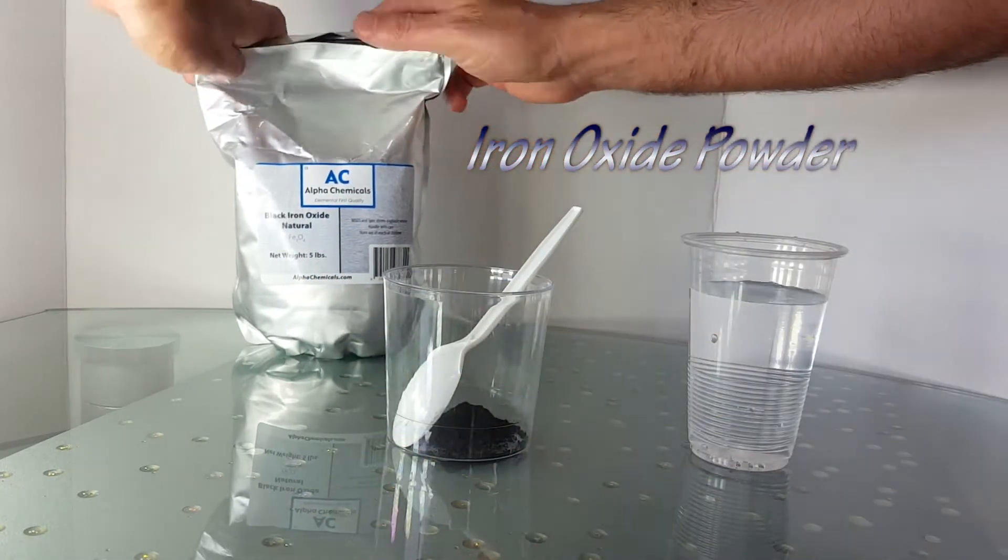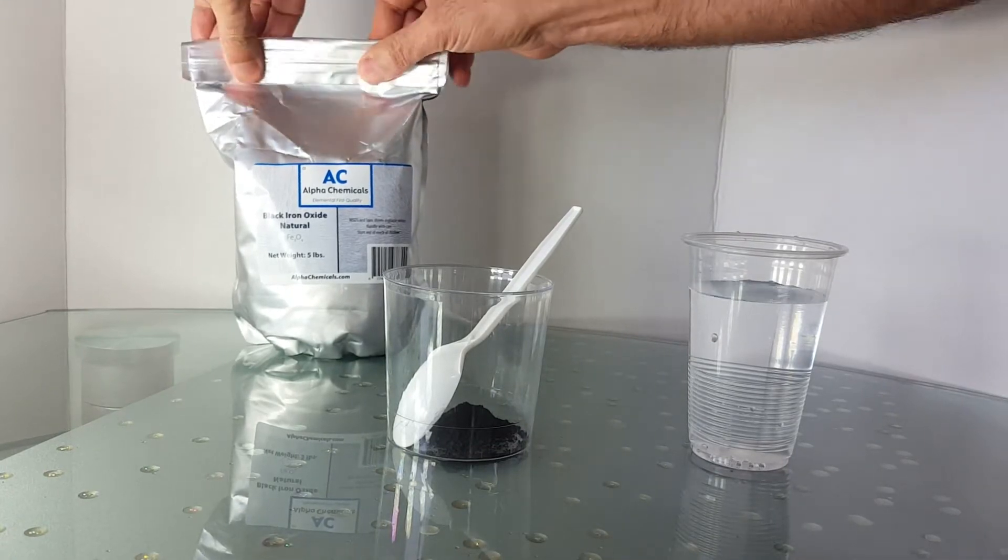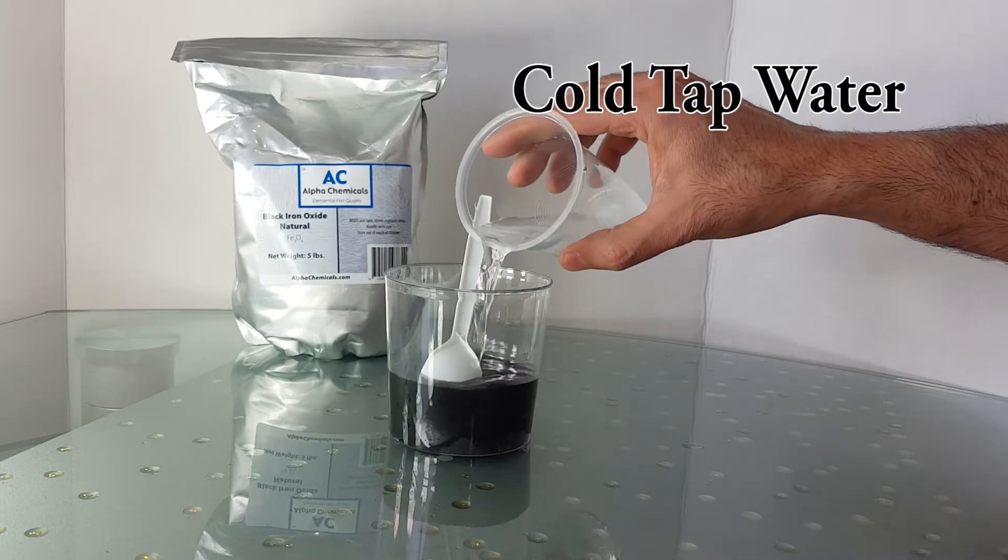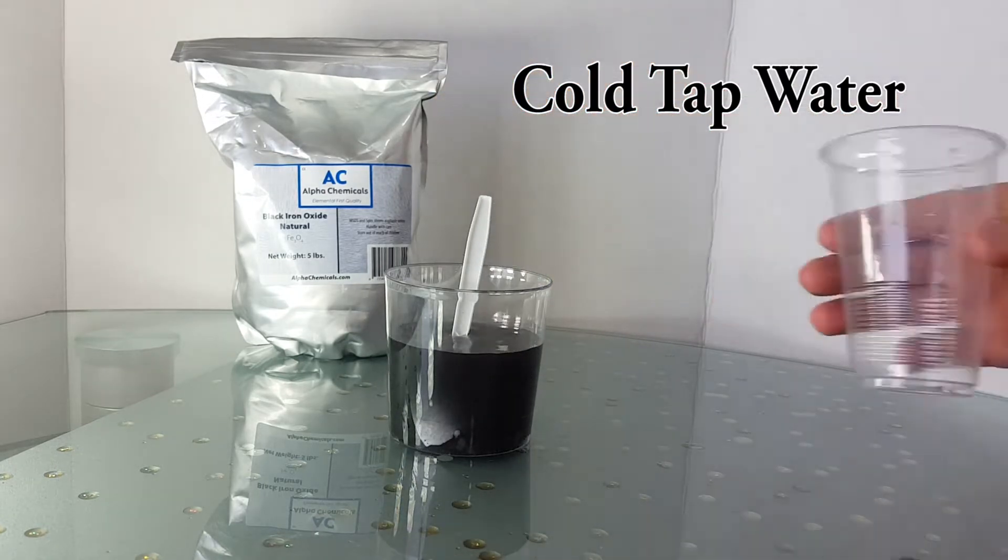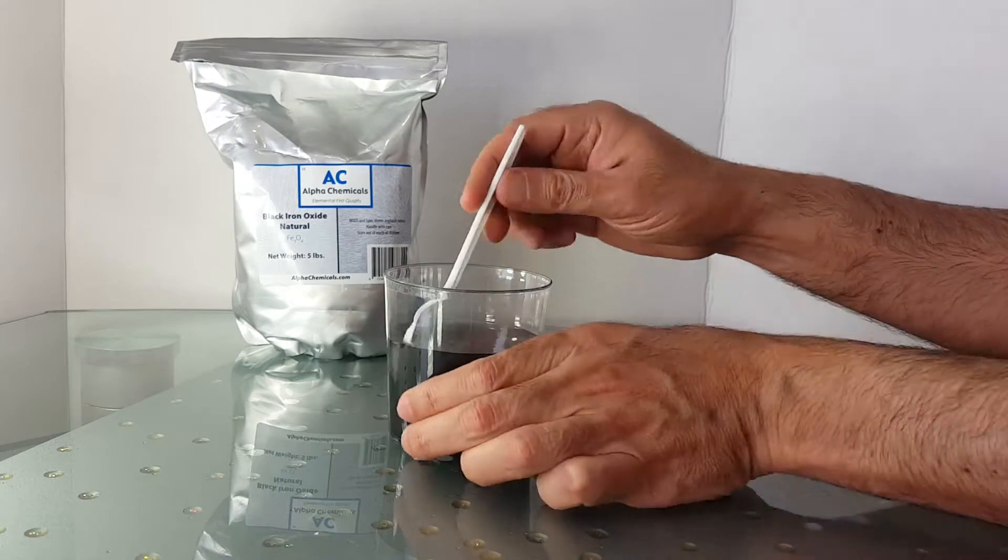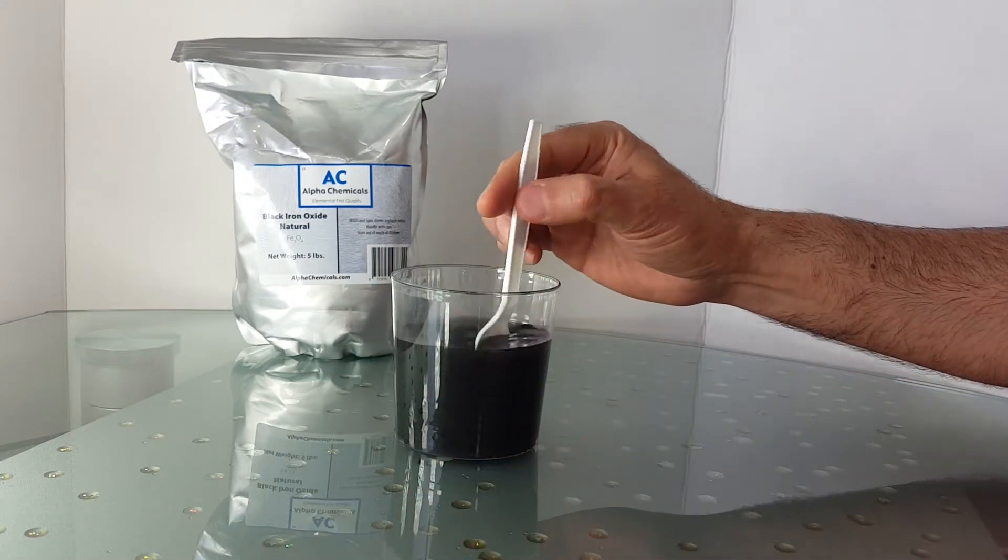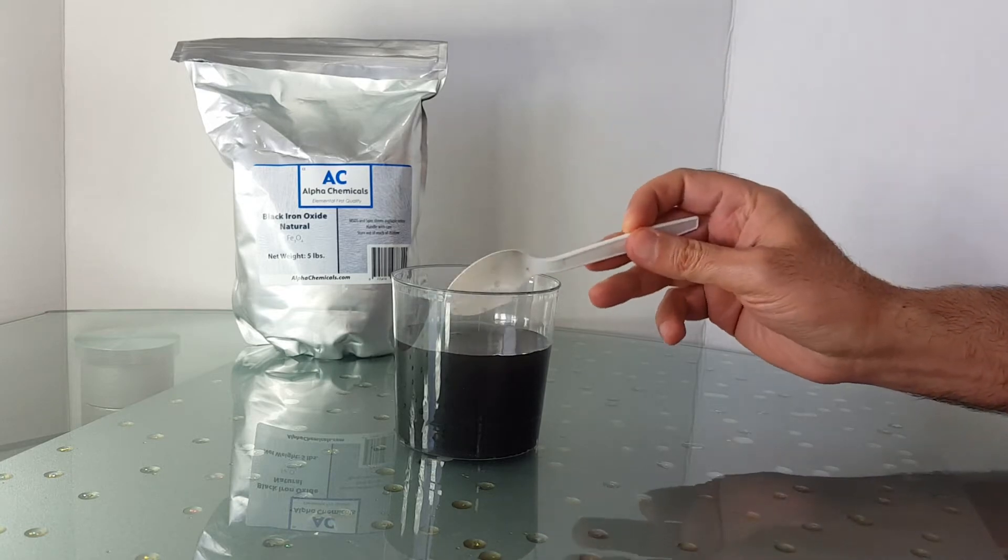To wash off the impurities, let's take a spoonful of the powder and mix it up with cold tap water. After stirring it well, we want to ensure that all the impurities get mixed up in the water.